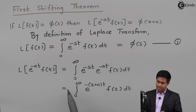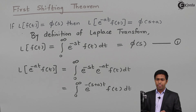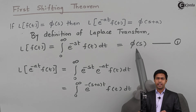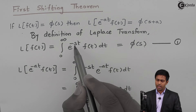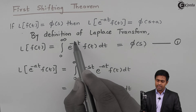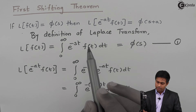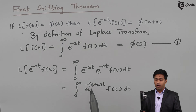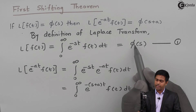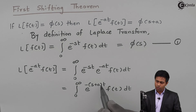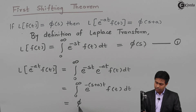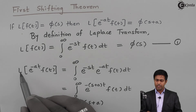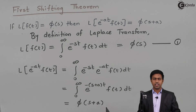Now, to get the value of this, let's observe the definition once again. In the definition, Laplace of f(t) equals F(s) because the coefficient of t in the exponent is s. Now if I compare this result with the definition, here the coefficient of t is s plus a. So when the coefficient of t is s, we get F(s). Therefore, when the coefficient is s plus a, we get F(s+a). And therefore, the Laplace of e raised to minus at into f(t) is equal to F(s+a). We are going to use this result to solve many problems based on the first shifting theorem of Laplace transform.